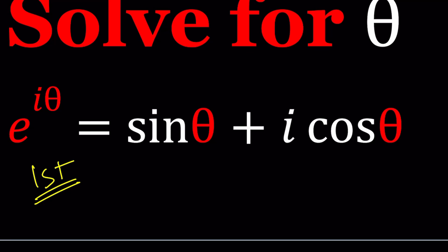I multiply both sides by i because it helps. So i times e to the i theta equals i sine theta plus i times i, i squared cosine theta.